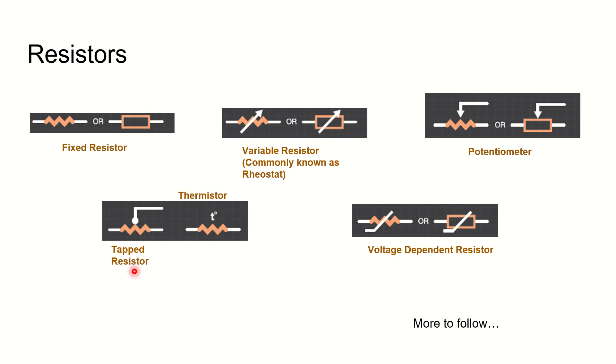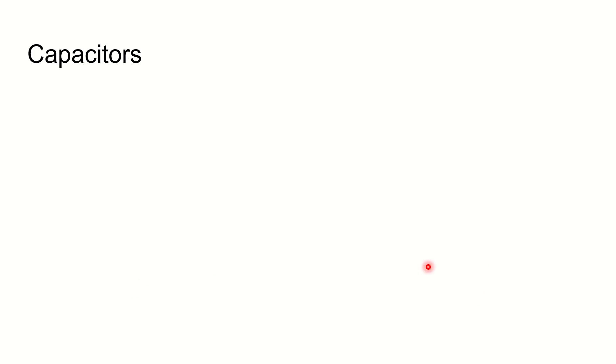This is tapped resistor. And voltage dependent resistor is represented this way with a slant over it. Fixed resistor, variable, potentiometer, tapped, thermistor, voltage dependent resistor - all these are explained here.